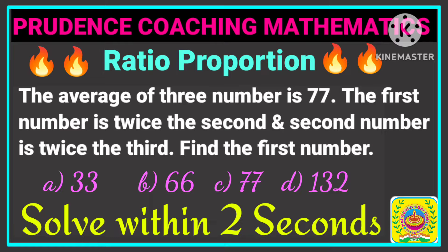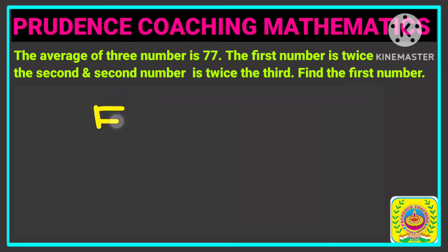The average of 3 numbers is 77. The first number is twice the second number.